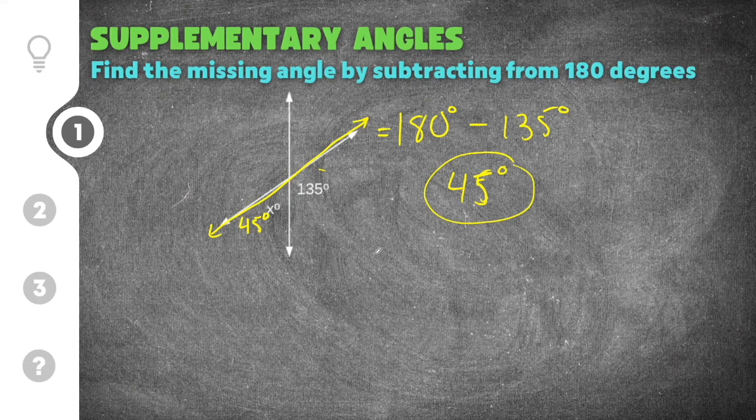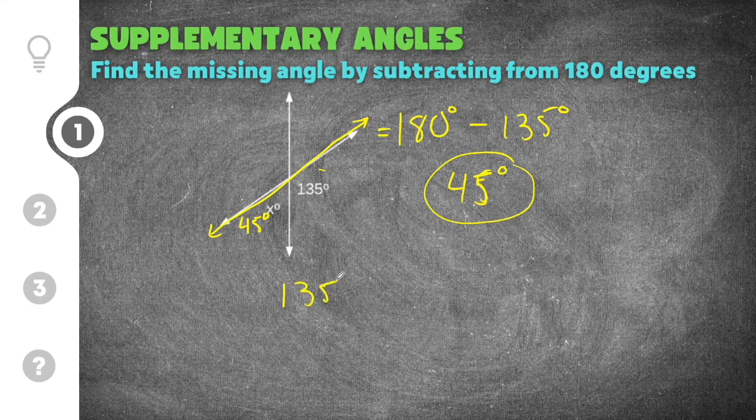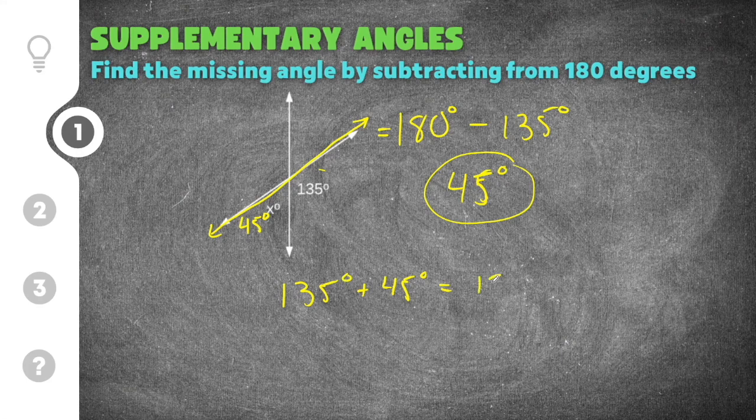And then like I said for the third tip if you want to double check your work you can say alright 135 degrees plus 45 degrees is going to add up to 180 degrees. So I know that this is correct. So it has to be the right answer.